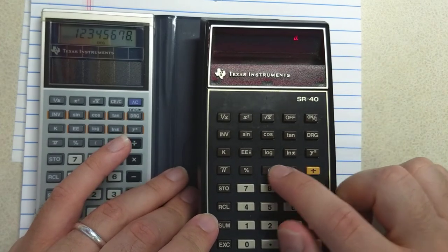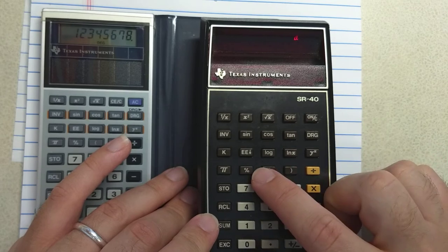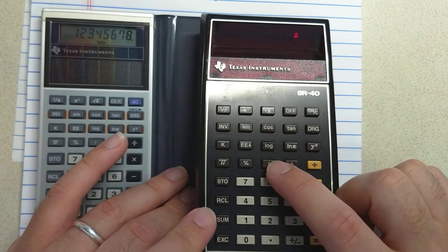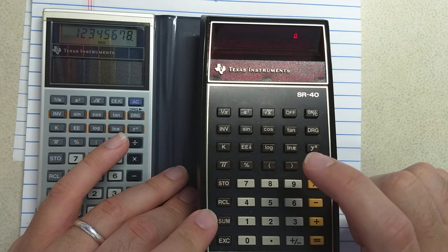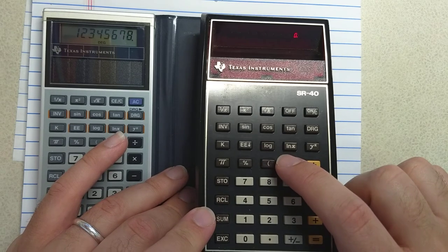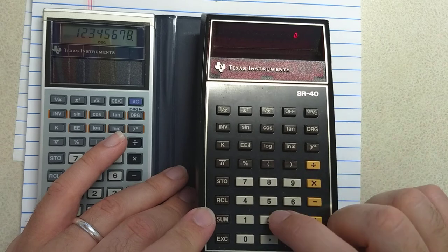So the parentheses version of the AOS debuts on some of TI's more expensive calculators a year or two earlier, but finally is brought to their bargain calculator line with the TI-30.